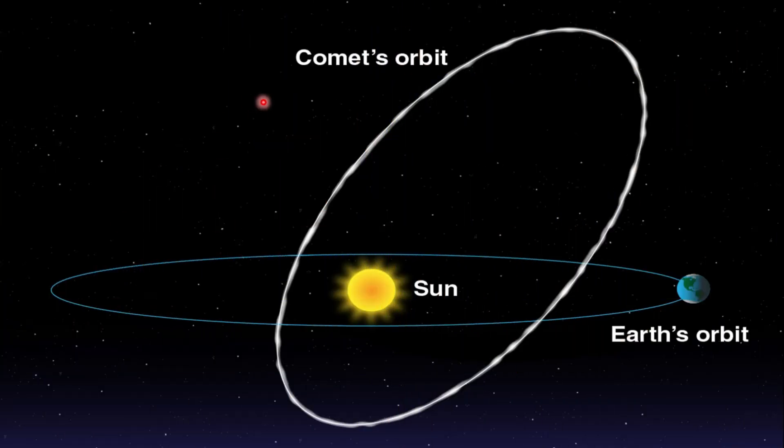According to this diagram, you can see the difference between Earth orbit and the comet orbit.